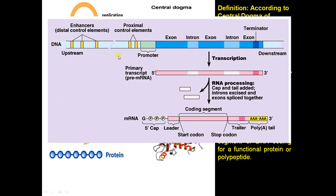Now we know that gene is not only a DNA segment. This is the eukaryotic gene structure — as you can see, there are many control elements like enhancers, a promoter, and these regions are not transcribed. Within the gene there are introns or non-coding sequences that are spliced during RNA processing. So gene is a segment of DNA along with many regulatory elements and non-coding sequences that codes for a functional protein.